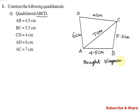The exact diagram will not look like this — this is just a rough diagram. So to find the fair diagram, first we have to draw the base AB equal to 4.5 cm. After drawing the base, we have to draw point C first, then point D.